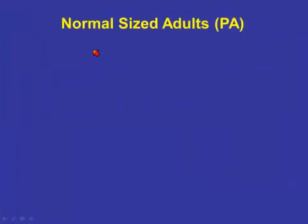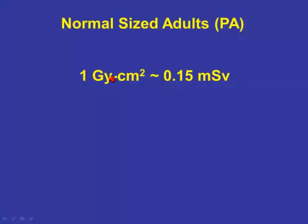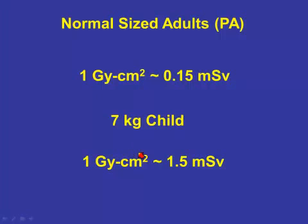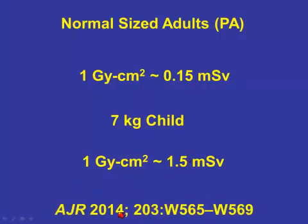To give you some idea of what these numbers are: for a typical IR procedure in the body with a PA projection, one gray centimeter squared is crudely about 0.15 millisieverts. However, for a child, the same gray centimeter squared will result in an effective dose that is 10 times higher — so 1.5 millisieverts.